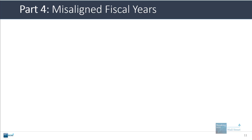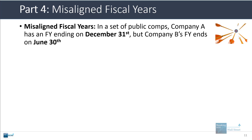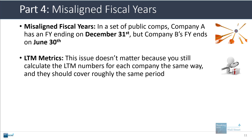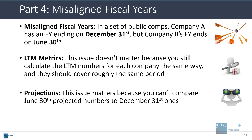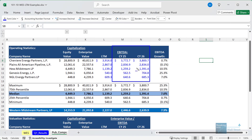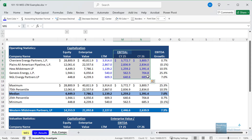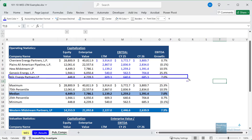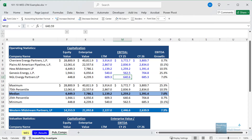One final point: what to do when you have misaligned fiscal years. If you have a set of public comps, company A might have a fiscal year ending December 31st, but company B's fiscal year ends June 30th. If you're calculating LTM metrics, this doesn't really matter - you still calculate LTM the same way for each company. It becomes an issue with projections. We use calendar year 2025 and 2026 (CY25 and CY26) in our example because one company, NGL Energy Partners, has a March 31st fiscal year end, requiring adjustments using fractions.